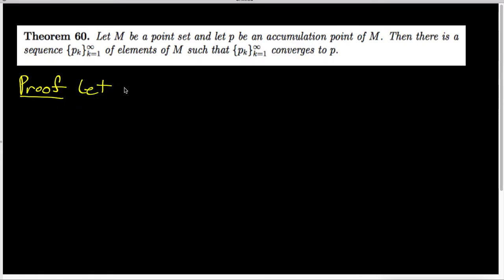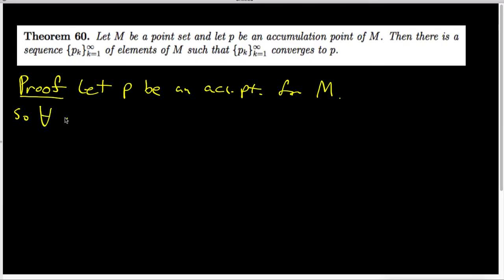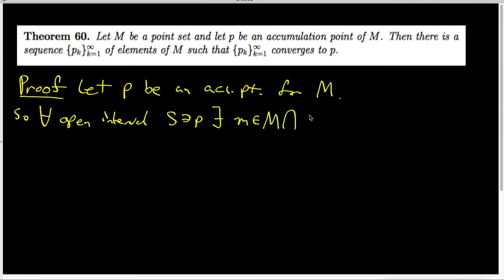Let's let p be an accumulation point for some set M. I want to think about what that means. The definition of accumulation point means that for every open interval S that contains p, there exists a little m inside capital M that's also inside my open interval S. So I can say that little m is in capital M intersect S, and I know that little m is not equal to p.